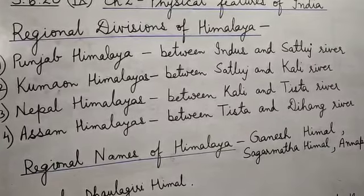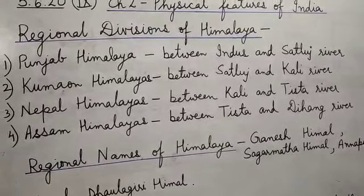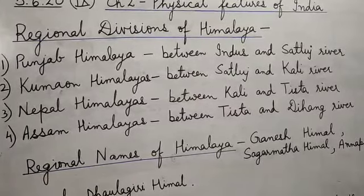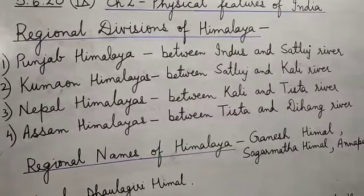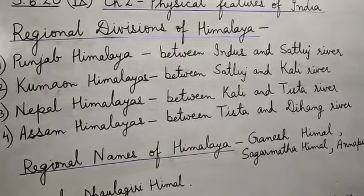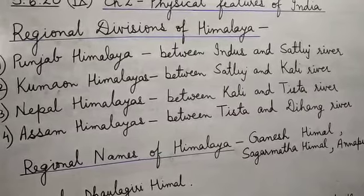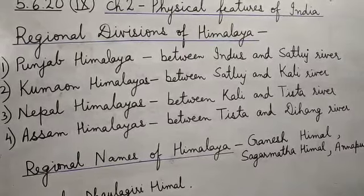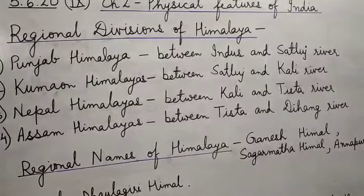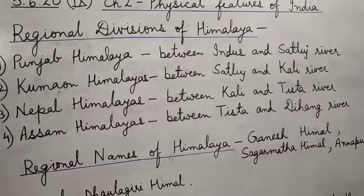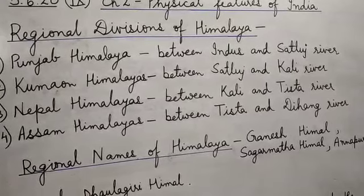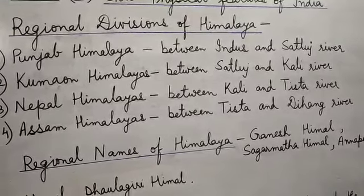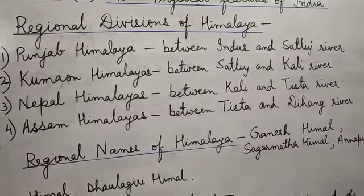The lesser Himalayas in Kumau Himalayas is represented by the Mussoorie range. The Shivalik in this region runs south of the Mussoorie range between the Ganga and Yamuna rivers. The flat valleys between the lesser Himalaya and the Shivalik ranges are called Doons, of which Dehradun is the most famous.